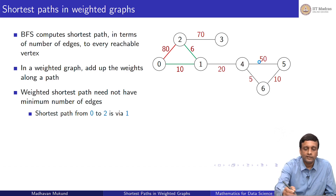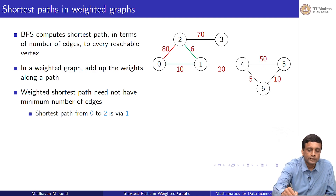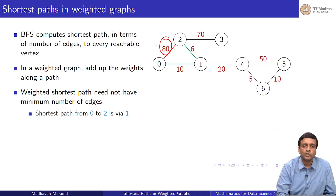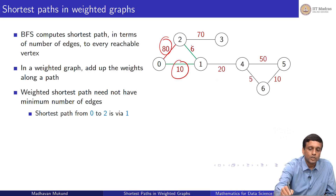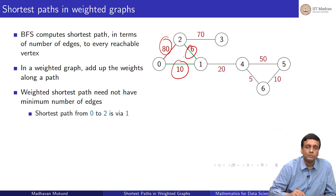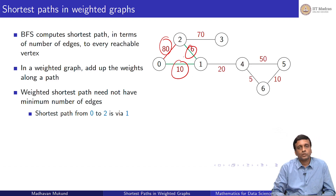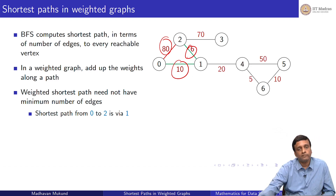In general, in a weighted graph, the weighted shortest path does not need to have the minimum number of edges in the unweighted sense. For example, from vertex 0, you can go to vertex 2 in one step but pay a cost of 80. Whereas going from 0 to 1 and then 1 to 2 takes two steps but the cost is 10 plus 6, which is 16 — much less. So the shortest path from 0 to 2 is actually via 1, an indirect path.